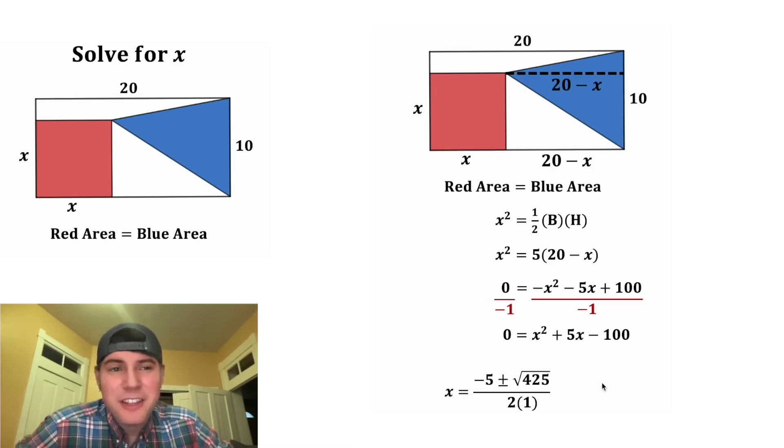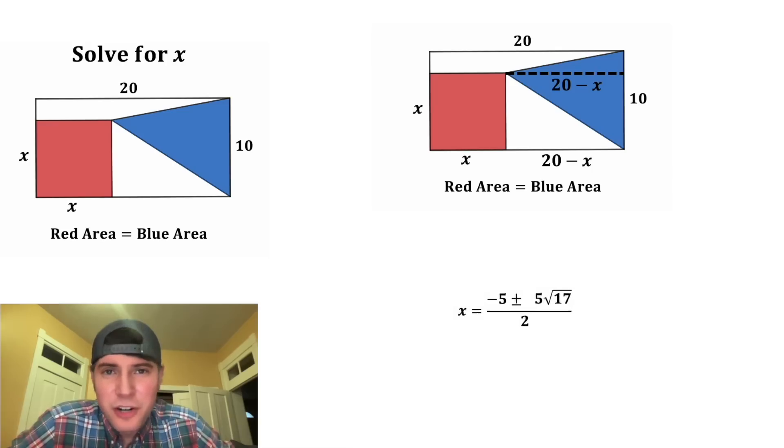Now, we're still not done. We can simplify this radical further. 425 is equal to 25 times 17. And that means we can rewrite this 425 as 25 times 17. And then we can split this up into square root of 25 times square root of 17. And the square root of 25 is equal to 5. And now we have our answers for x.